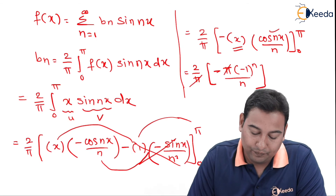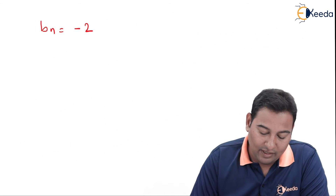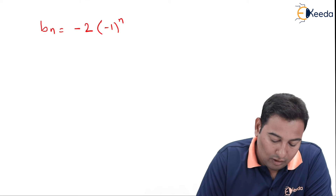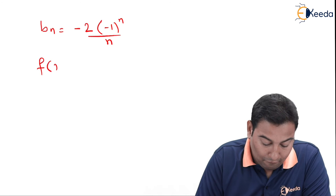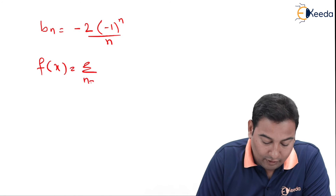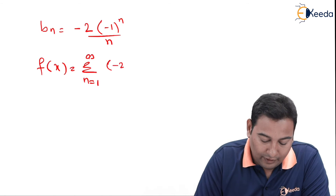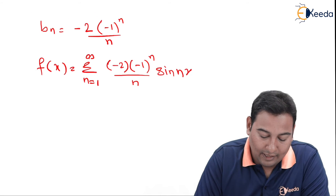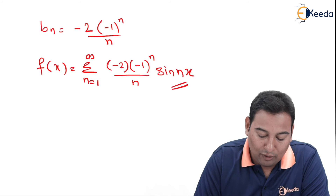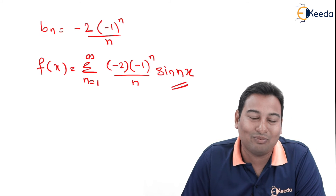The value of b_n that we got is minus 2 times minus 1 raised to n, upon n. Finally, f of x is summation of n equals 1 to infinity b_n, that is minus 2 times minus 1 raised to n upon n, into sin(nx). We got the solution for f of x equal to x. Hope you understood, thank you.